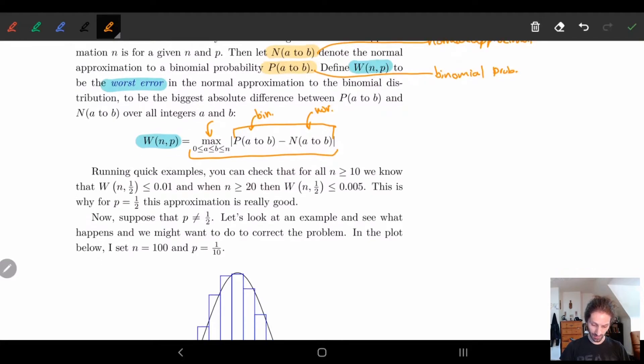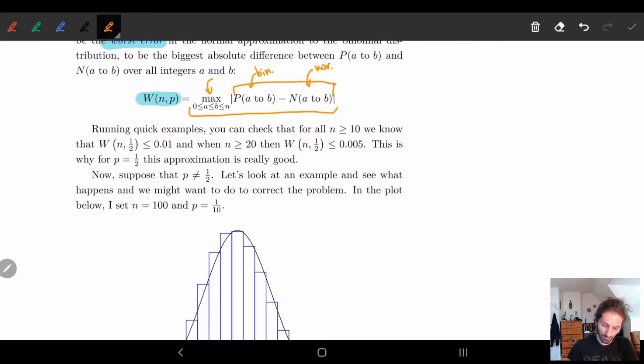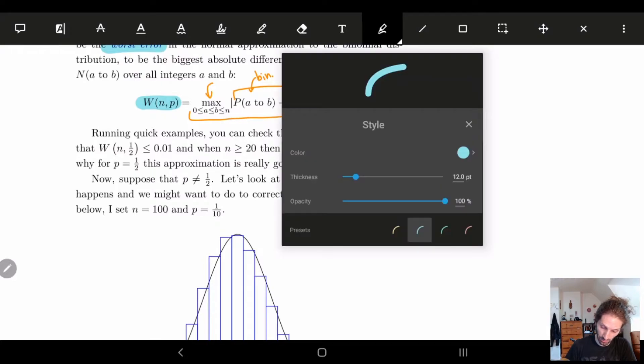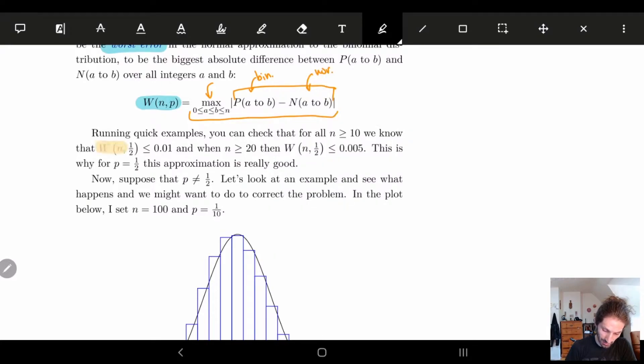To see what I'm talking about, let's run through a quick example. If we have p is equal to one-half, then looking at this W(n,p), what we end up getting is W(n, 1/2) for n greater than or equal to 10 is less than or equal to 0.01.